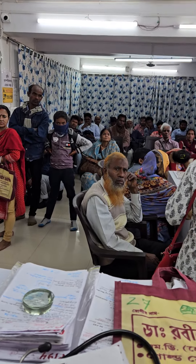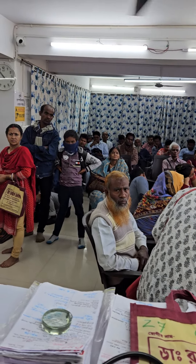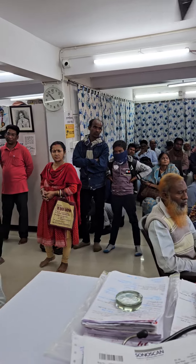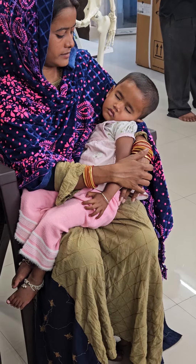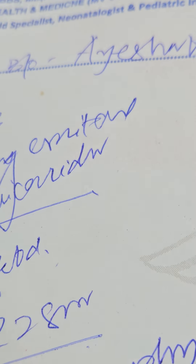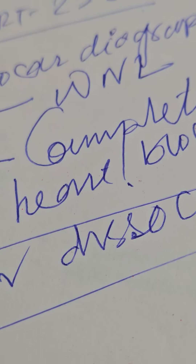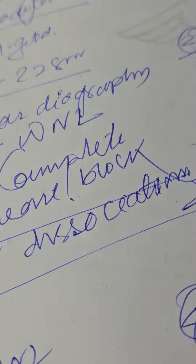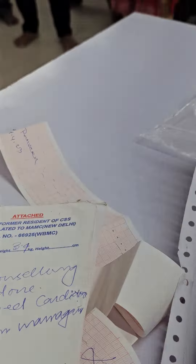My friends, I want to demonstrate a cardiac case of congenital heart disease. This baby is about two and a half years of age and is suffering from congenital cardiac disease. This is the prescription of the neonatal cardiac surgeon. It clearly indicates there is complete heart block with AV dissociation and right ventricular preponderance.